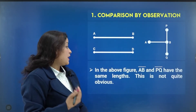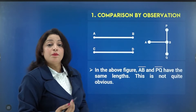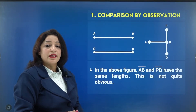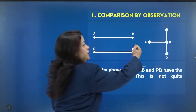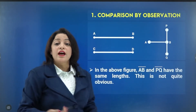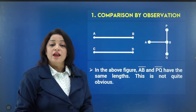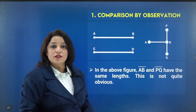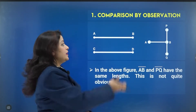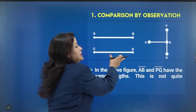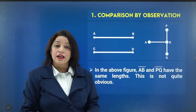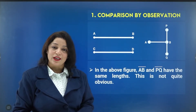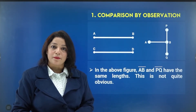In the above figure, AB and PQ have the same lengths — you can see they have the same length, though this is not quite obvious. Similarly, AB and CD are equal in length by observation. We can conclude this from looking at them.